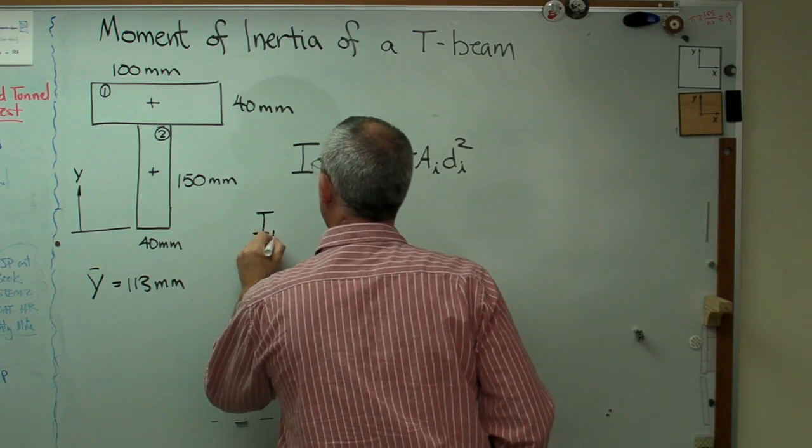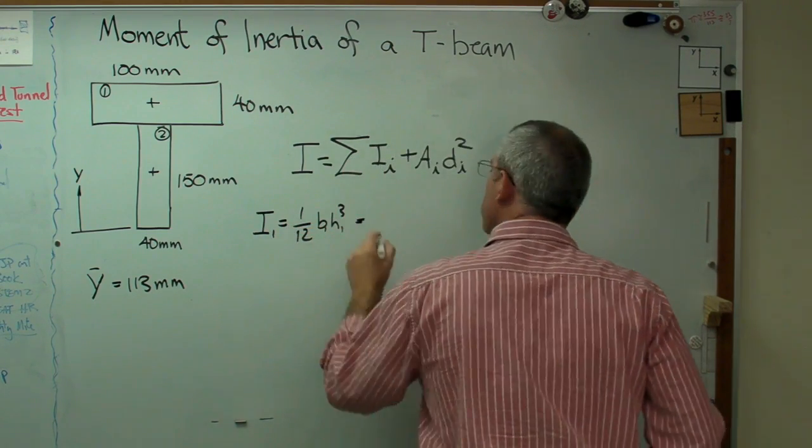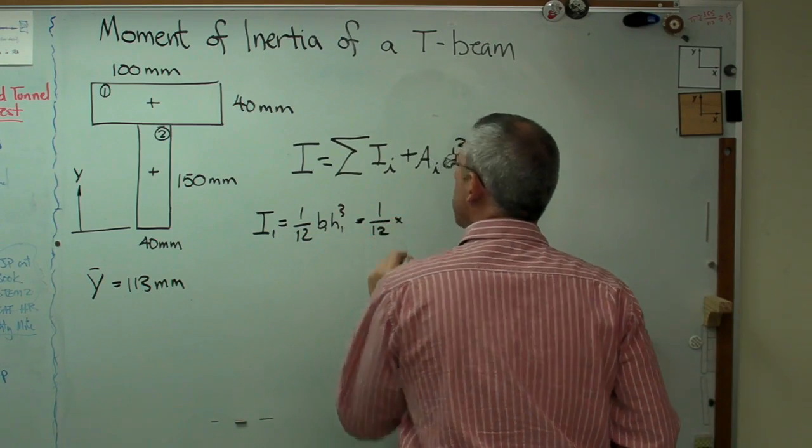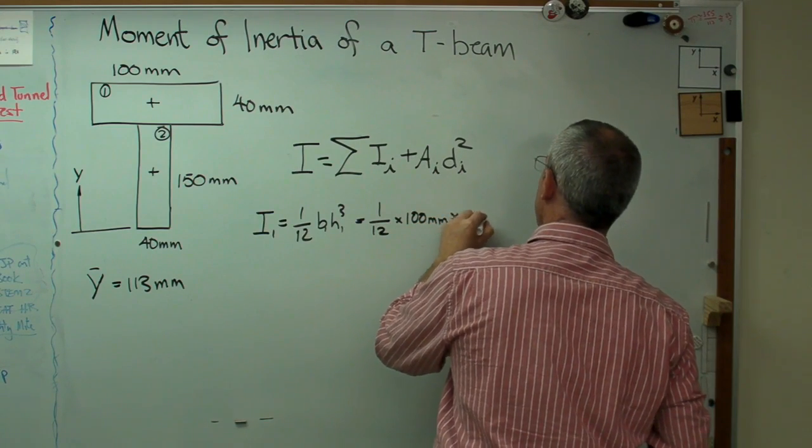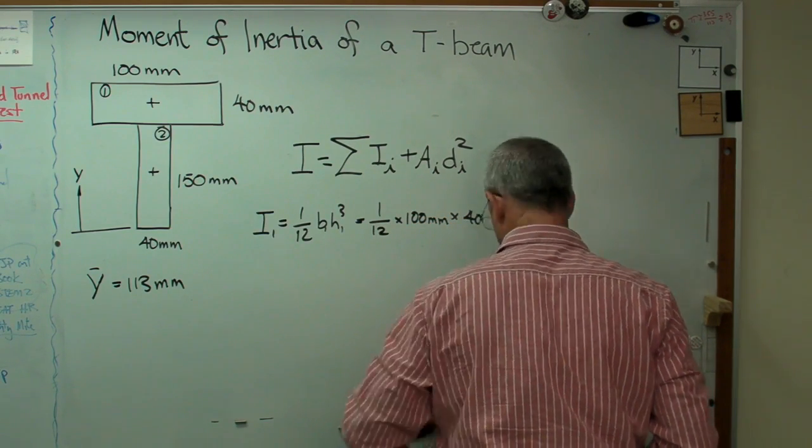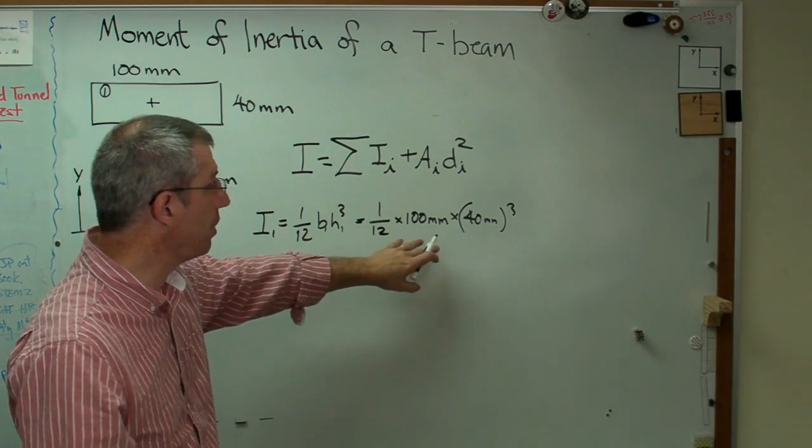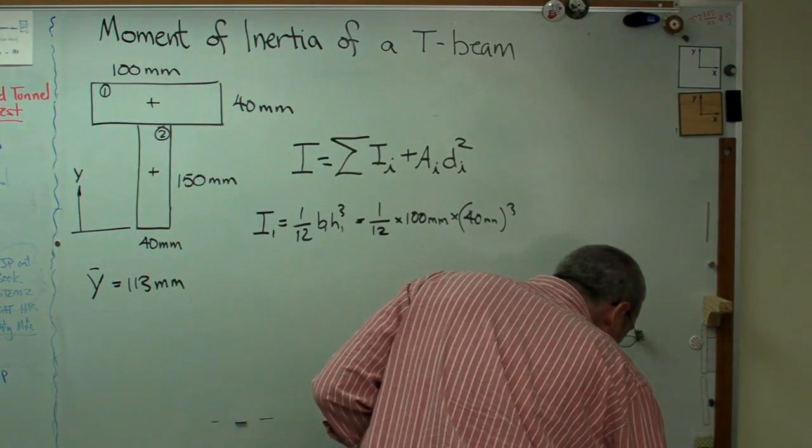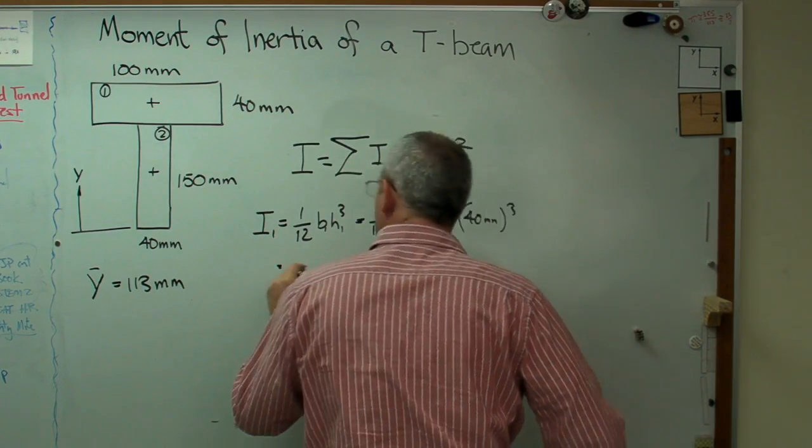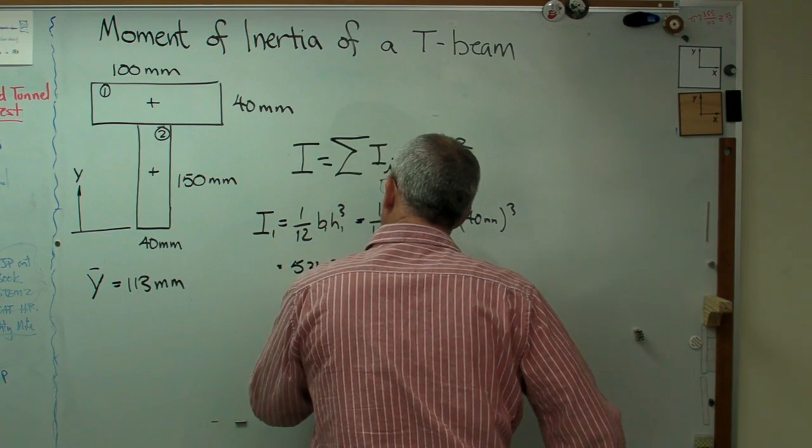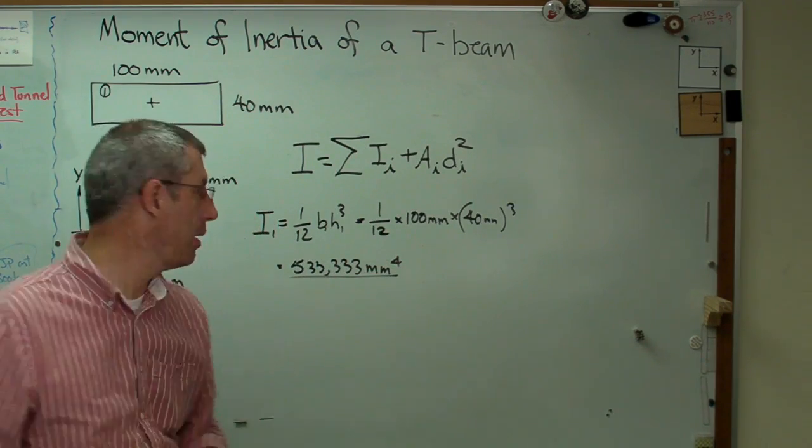Well, I1 is 1/12 b h cubed. I'll put a 1 and a 1 there. So that's 1 over 12 times the base. Well, that's 100 millimeters times 40 millimeters, that cubed. So this is going to be a pretty big number. We're working in millimeters and millimeters are very small. So that's what we're going to get here. And this works out to be 533,333. Big number because millimeters is only about that big.